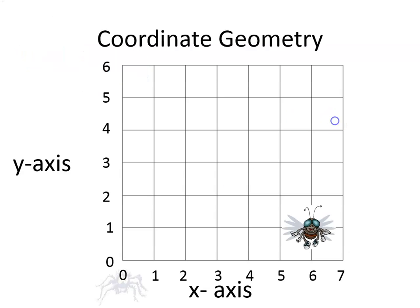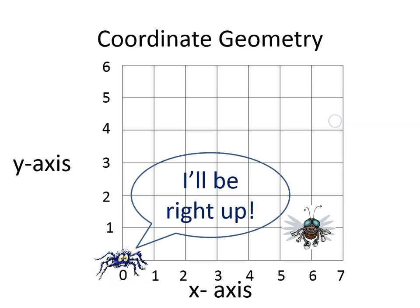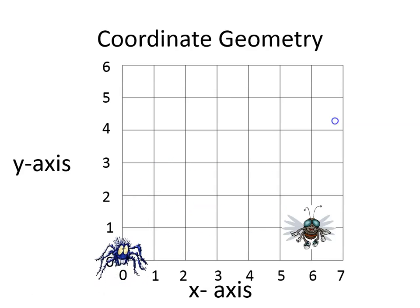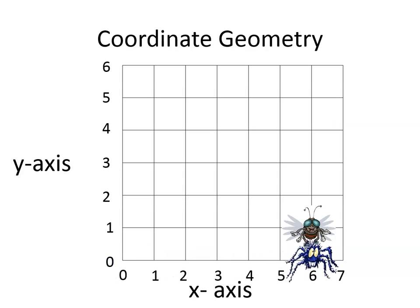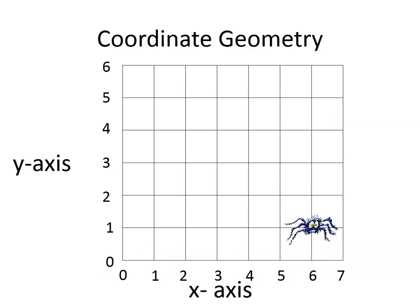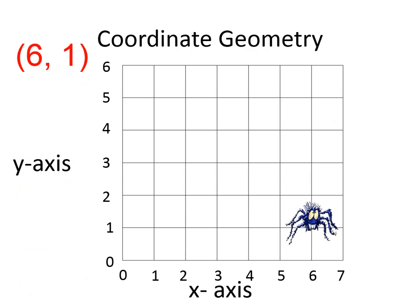There's another fly. The spider says 'I'll be right up,' goes to the right and goes up, and the spider is now at six comma one.